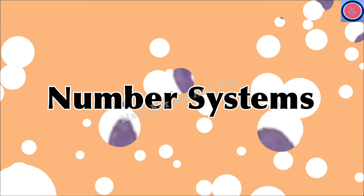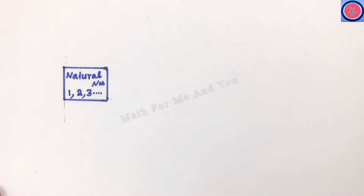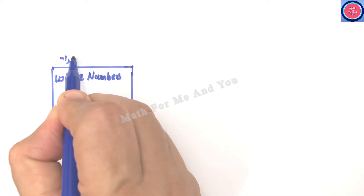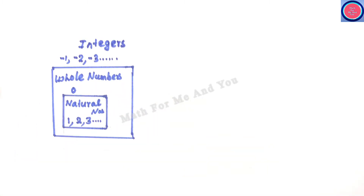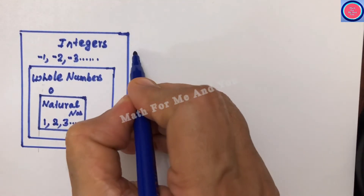State whether the following statements are true or false. To answer this type of question correctly, we must have a clear idea about number systems. Let's begin with the smallest set of numbers, which is natural numbers: 1, 2, 3, etc. up to infinity. When we add 0 to this set we get whole numbers: 0, 1, 2, 3, etc. up to infinity. When we join negative numbers like -1, -2, -3 etc. to this set, we get a larger set known as integers.